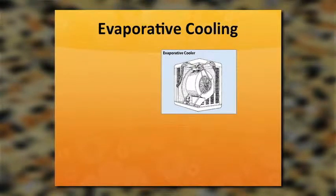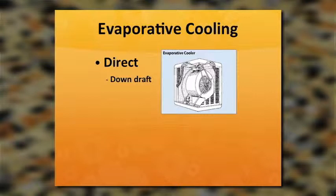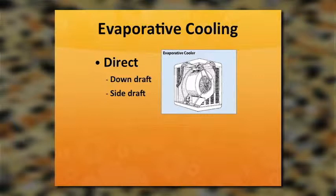This is the evaporative cooler — some call them swamp coolers. We have two types: direct evaporative cooler — a downdraft, which sits on the roof and blows air down into your house through a vent; and a side draft, which is placed in the window and blows air into the house sideways. These are really good, especially in a dry climate, because they put moisture into the air.